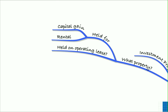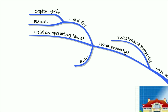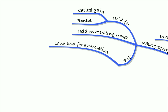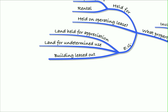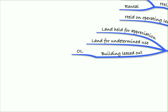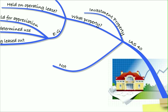If we're renting it to others on an operating lease — for example, if we had land held for appreciation, or land for an undetermined use, we would class those as investment property. Also, if we have a building leased out to someone else on an operating lease, that's going to be classed as investment property.